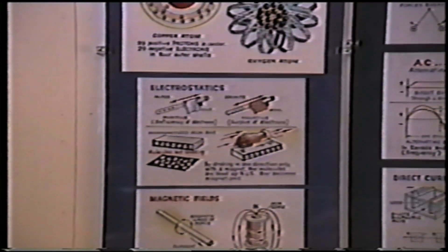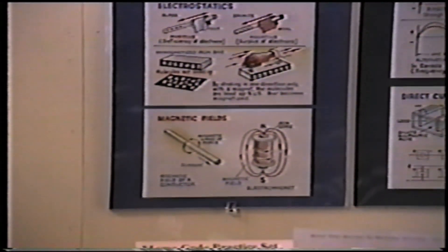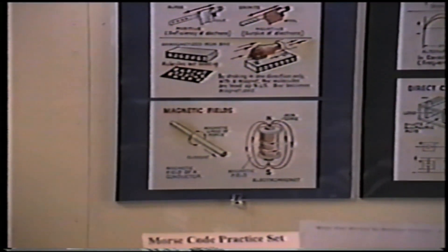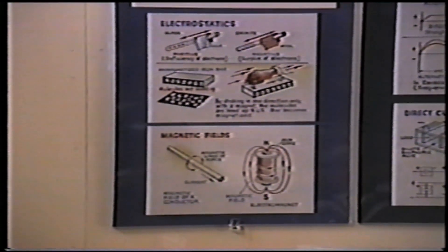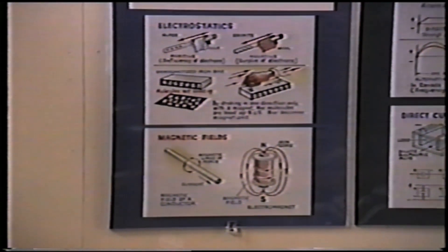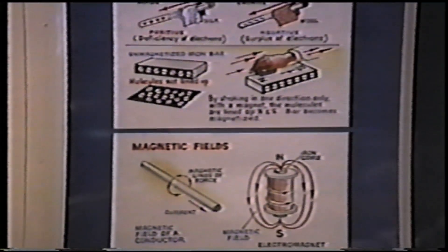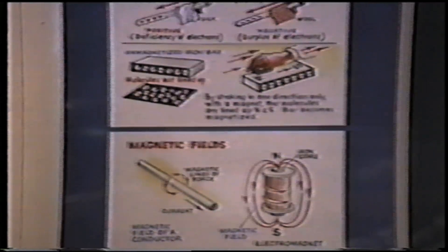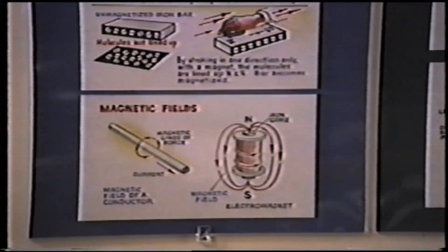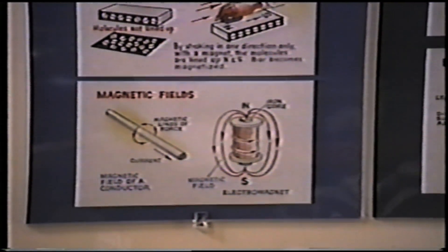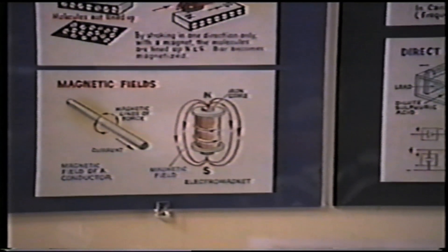For the generation of usable electrical power, a much higher current must be generated. This can be done by using chemical methods such as batteries, or mechanical methods using conductors moving in magnetic fields.